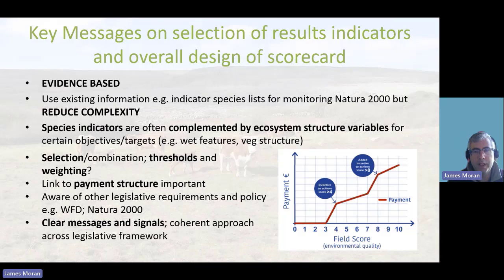In this specific case, scores one to three were similar to what is expected to be delivered under baseline conditionality, so payments started at four. In order to incentivise moving from medium to the rarer, higher scores, there was a steep increase or inflection in payments from score seven to eight.